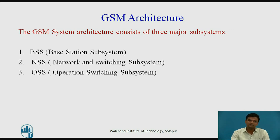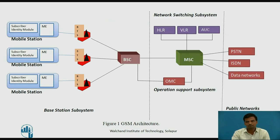GSM System Architecture consists of 3 major subsystems: the first is the Base Station Subsystem, the second is the Network and Switching Subsystem, and the third is the Operation Support Subsystem. The GSM technical specifications define the different elements within the GSM network architecture and the ways in which they interact to enable overall system operation. We can observe the detailed architecture of GSM and the function of each element.